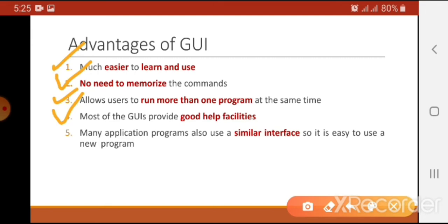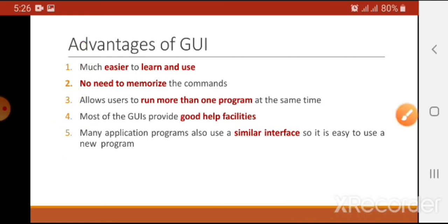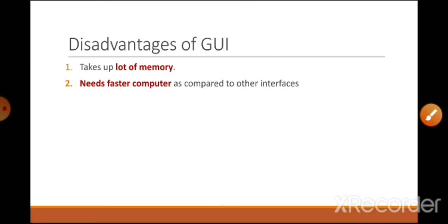Most GUI systems provide a help facility — if we have any confusion or don't know how to perform a task, we go to the help facility provided in the GUI interface. Another important advantage is that many application programs use similar interfaces, which makes them easy to use. For example, MS Word, MS Excel, and PowerPoint all have similar interfaces.